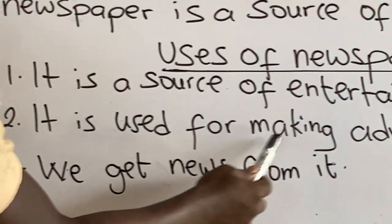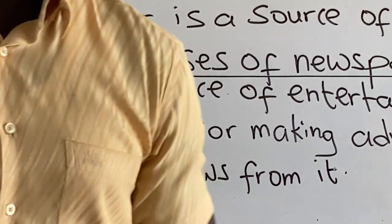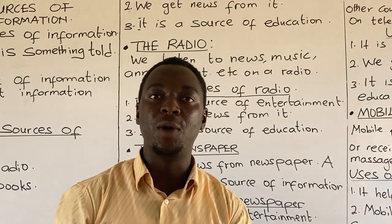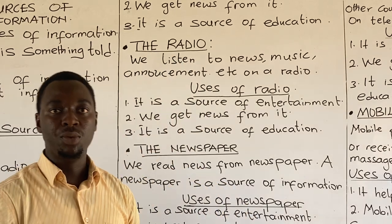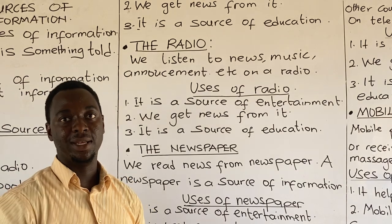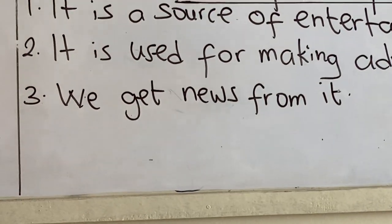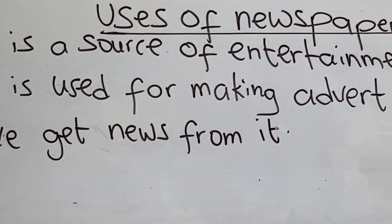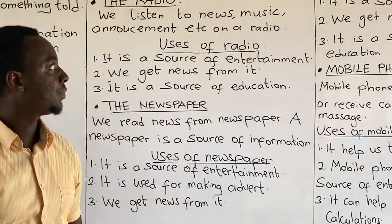Two: the newspaper is used for making adverts. We advertise our products so people can know what we are selling in our shops, and read about the goods we are selling. The newspaper becomes a point for advertisement. Three: we get news from it — that is the main use of the newspaper, to know what is going on in other parts of the country and the world.